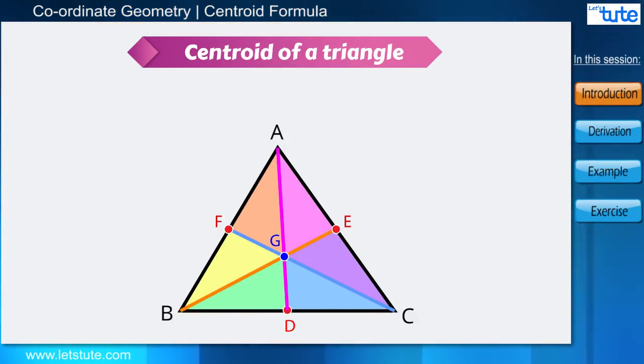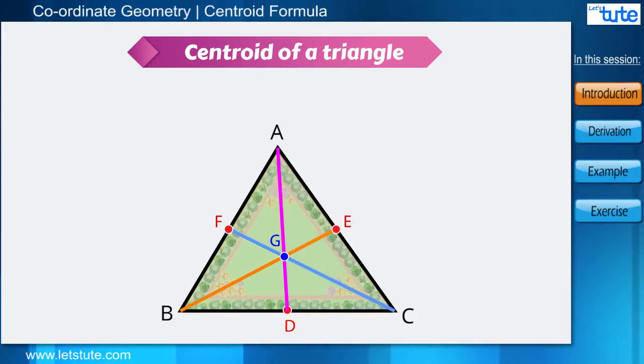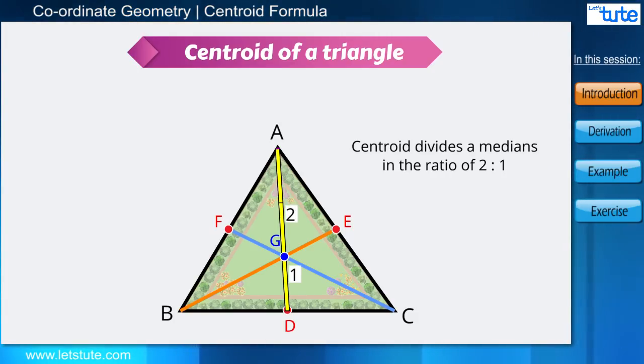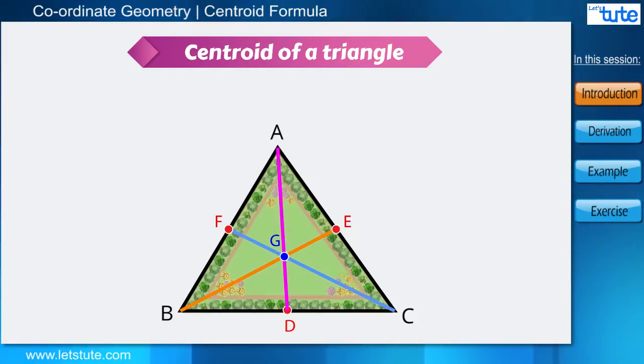There is one more important property of the centroid of a triangle: it divides all the medians in the ratio of 2 is to 1. It means if we go from the vertices to the centroid, then the length is two-thirds of the entire median, and if we go from the centroid to the base, then the length is one-third of the entire median.